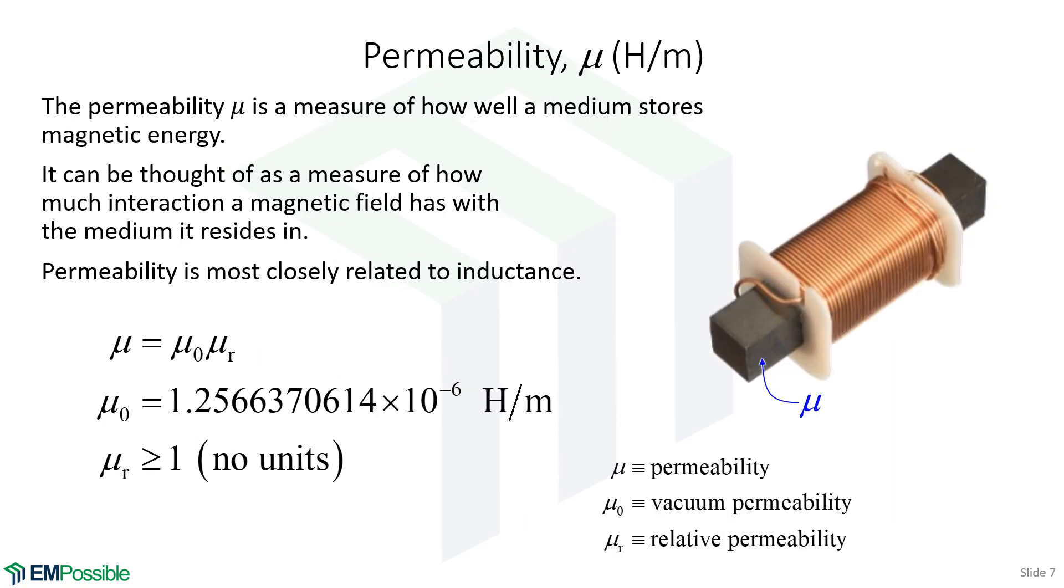Then there's the permeability. This is a measure of how well a medium stores magnetic energy. Again, there's two ways to store magnetic energy. There's energy in the field itself. And there's also matter can store magnetic energy. And a little bit more loosely, we can think about the permeability is just how much the magnetic fields interact with a medium. And the permeability is most closely associated with inductance. And that makes sense since we're talking about storing magnetic energy.